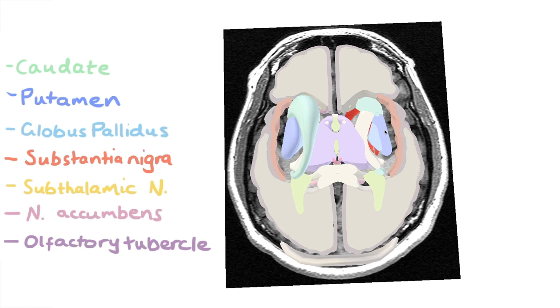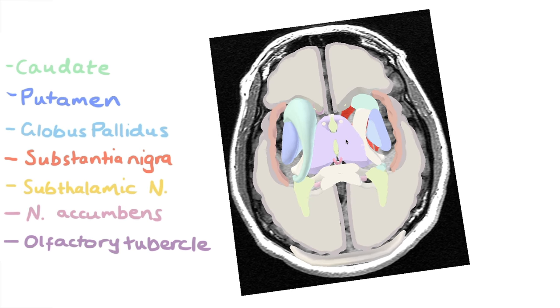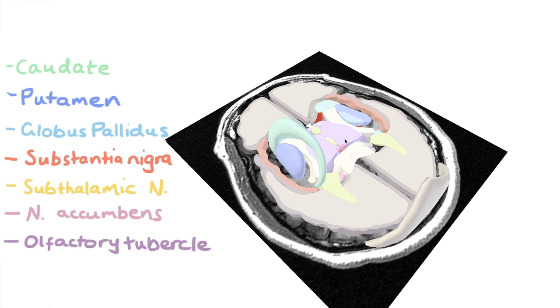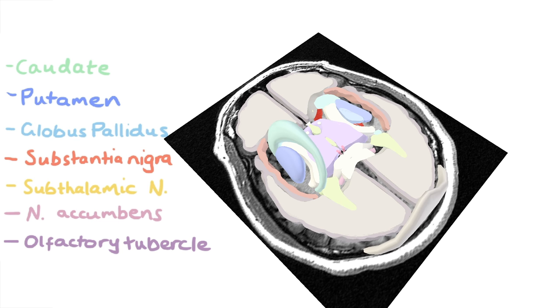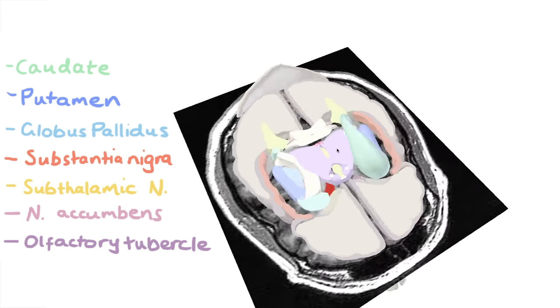This purple bit in the center is the thalamus. The green bits represent the ventricles, but we'll cover them in a further video down the track.